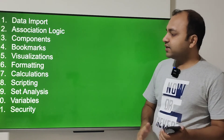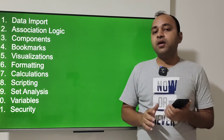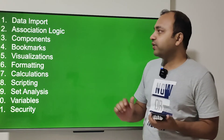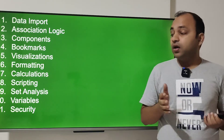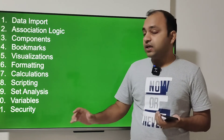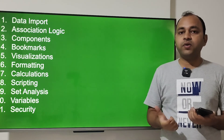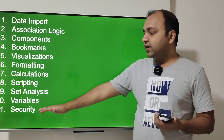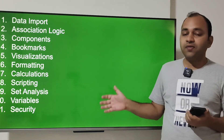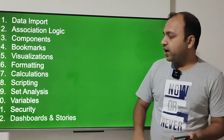The eleventh topic is security. Qlik Sense provides an amazing way to specify custom-level security. On a particular geography, product, or any field, you can create a very flexible security data model and apply security — something very useful for enterprise-level applications.